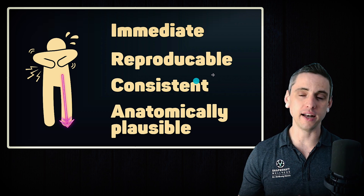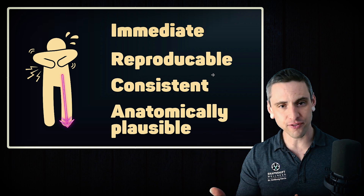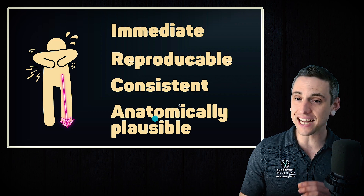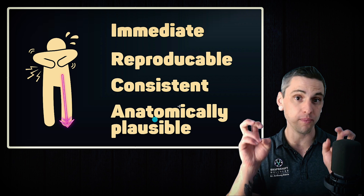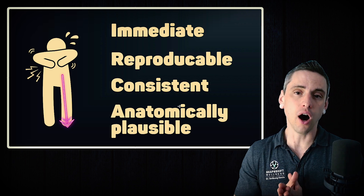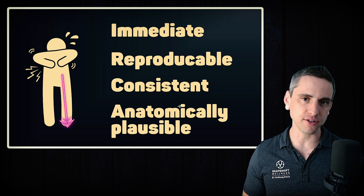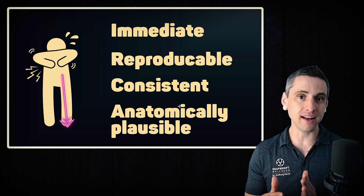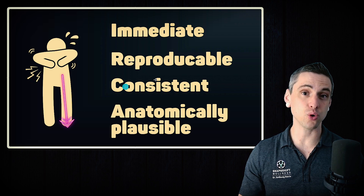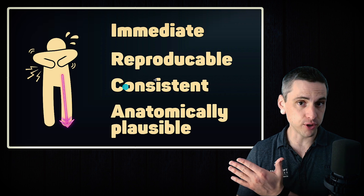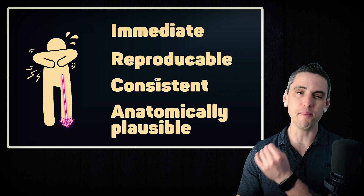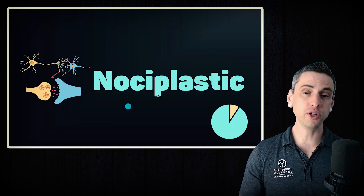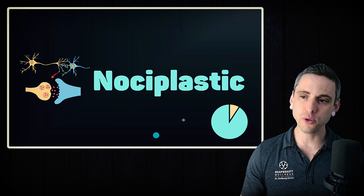It is consistent and reproducible — you can reproduce the same pain every single time you do a particular position. It is not sometimes here and then there, up and then down. It is anatomically plausible, meaning the exact distribution of the nerve symptoms must be consistent with the MRI findings of the disc herniation at the correct level and on the correct side. If the MRI does not match the clinical picture, then it is not neuropathic pain. Neuropathic pain is rare. Some of you will definitely have some neuropathic pain and we should work around that, but most of you don't actually have neuropathic pain, even if you think you do.